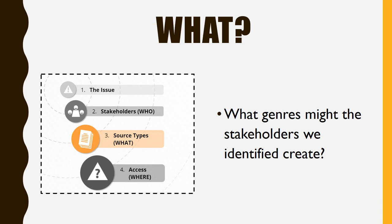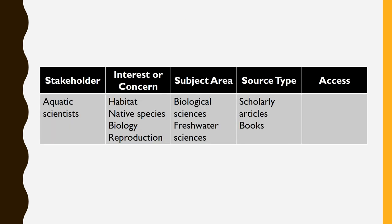Now let's think about what these stakeholders create that could help us discover their perspectives in their own words. This will help us make sure we accurately represent their values and opinions, and don't limit ourselves to what we already believe or the perspectives of academics and researchers. I think scientists are probably creating scholarly articles and books. What genres or source types do the stakeholders you thought of create? These could be from any point on the information cycle — photos, social media posts, news stories, pamphlets, websites.